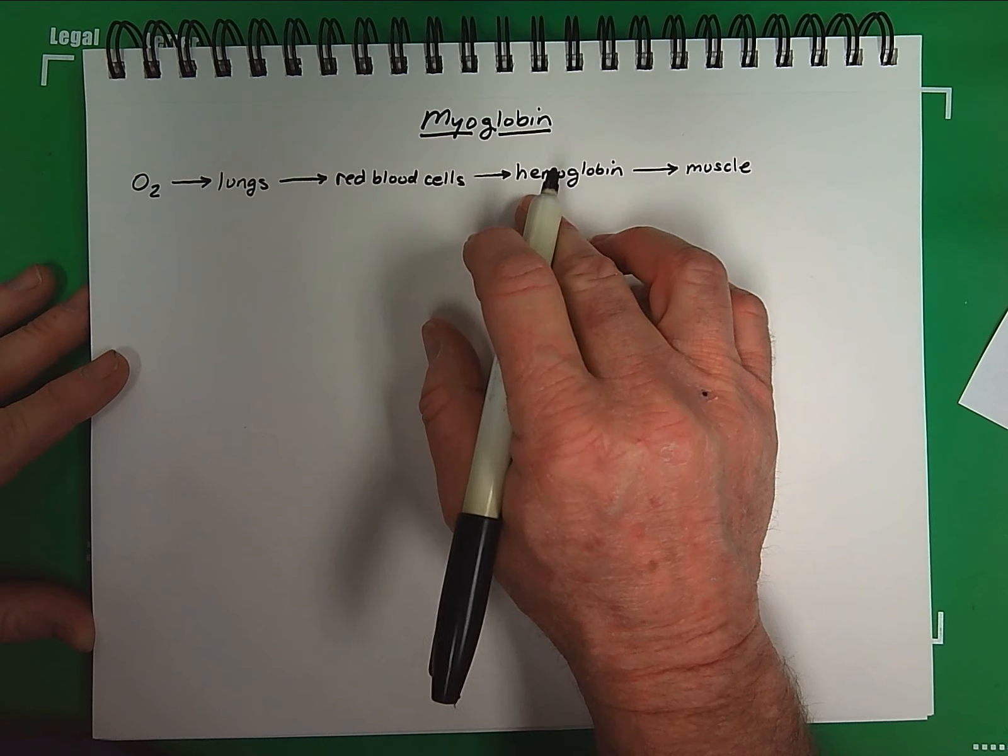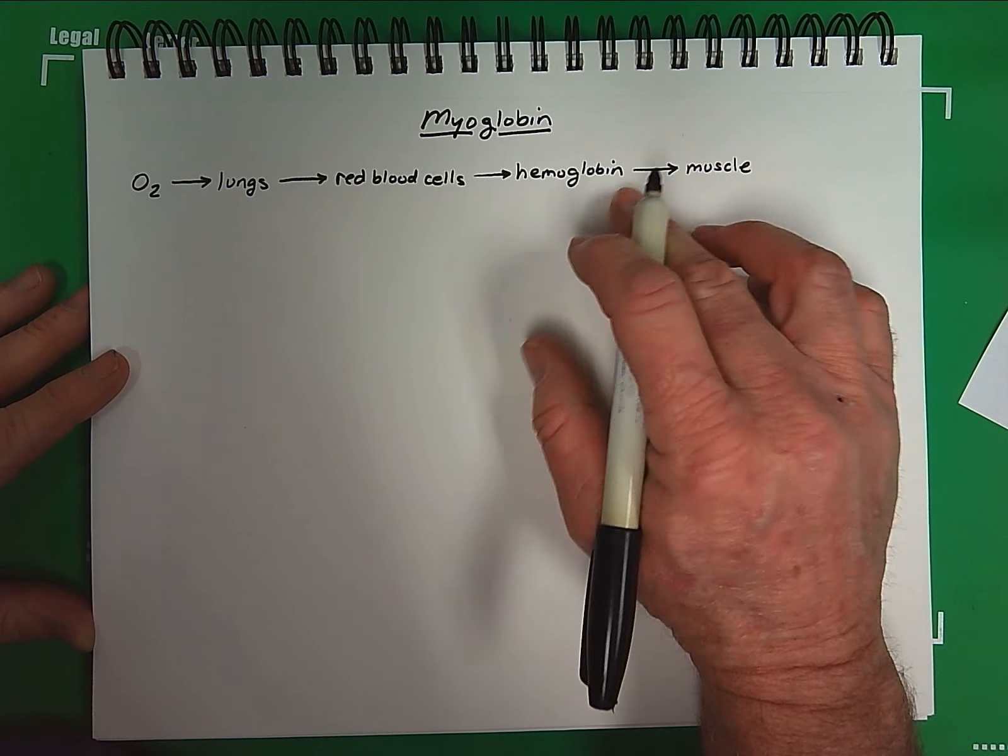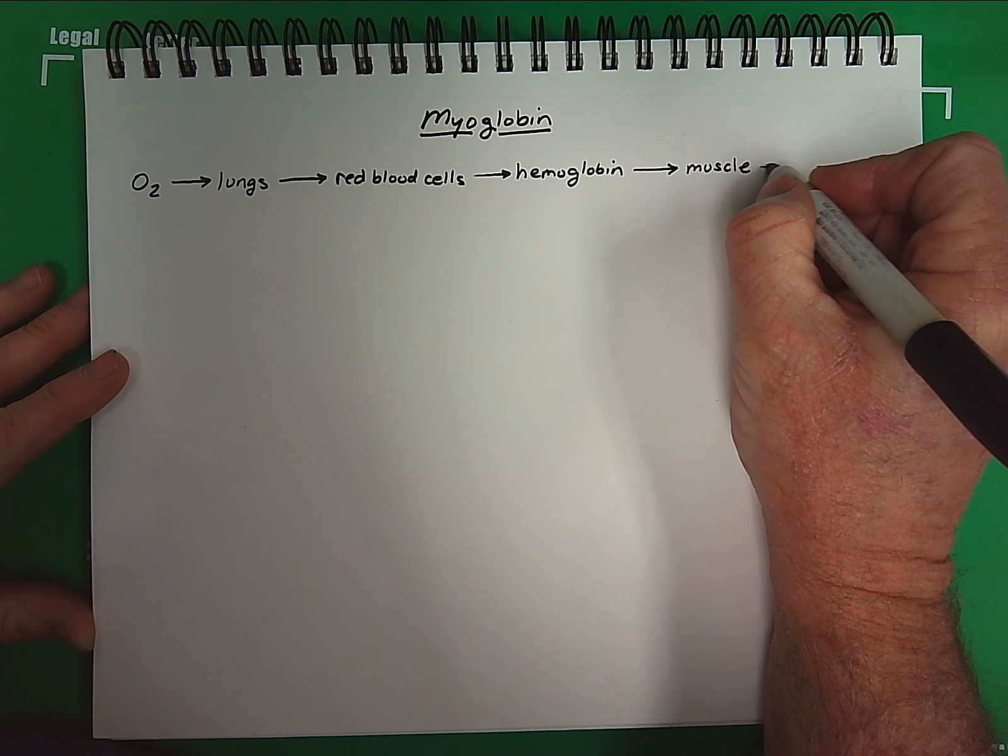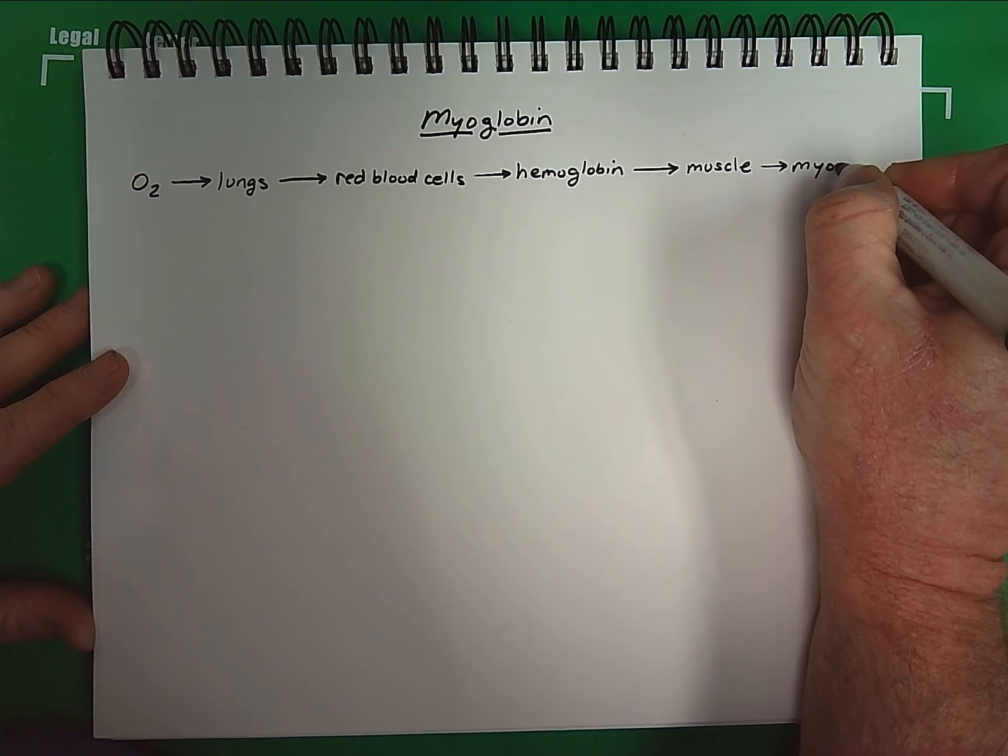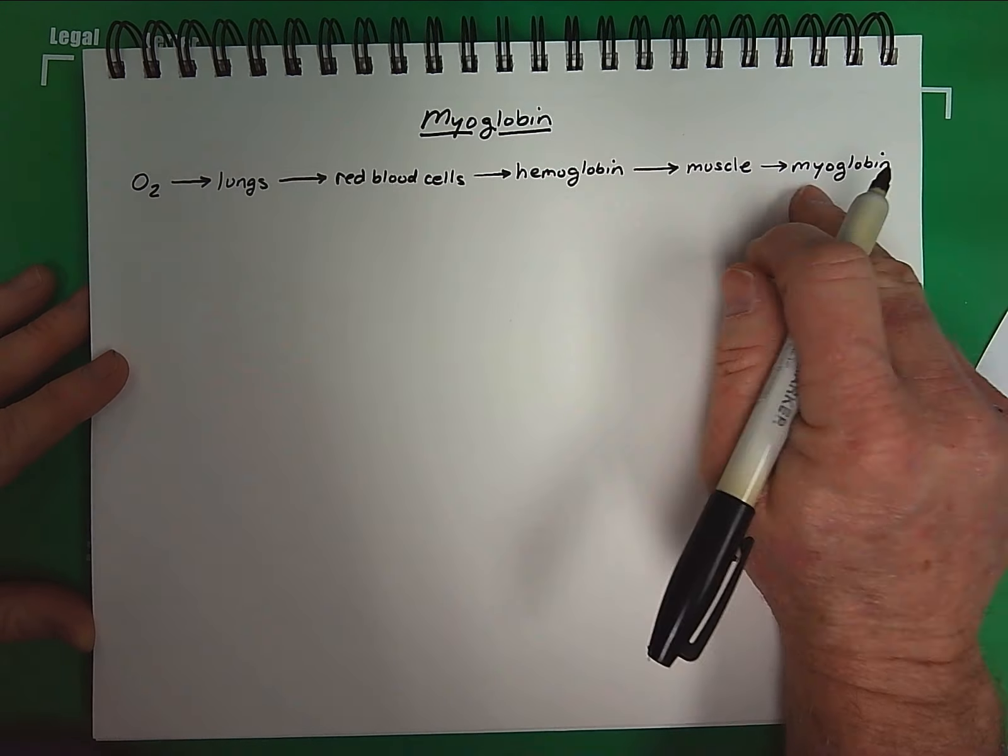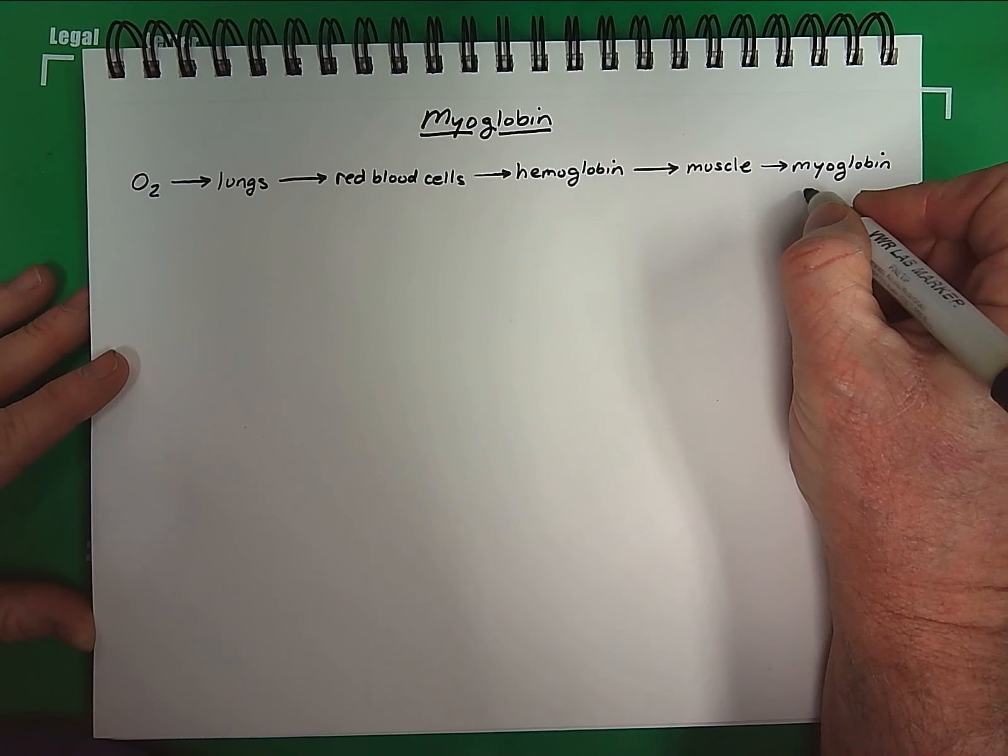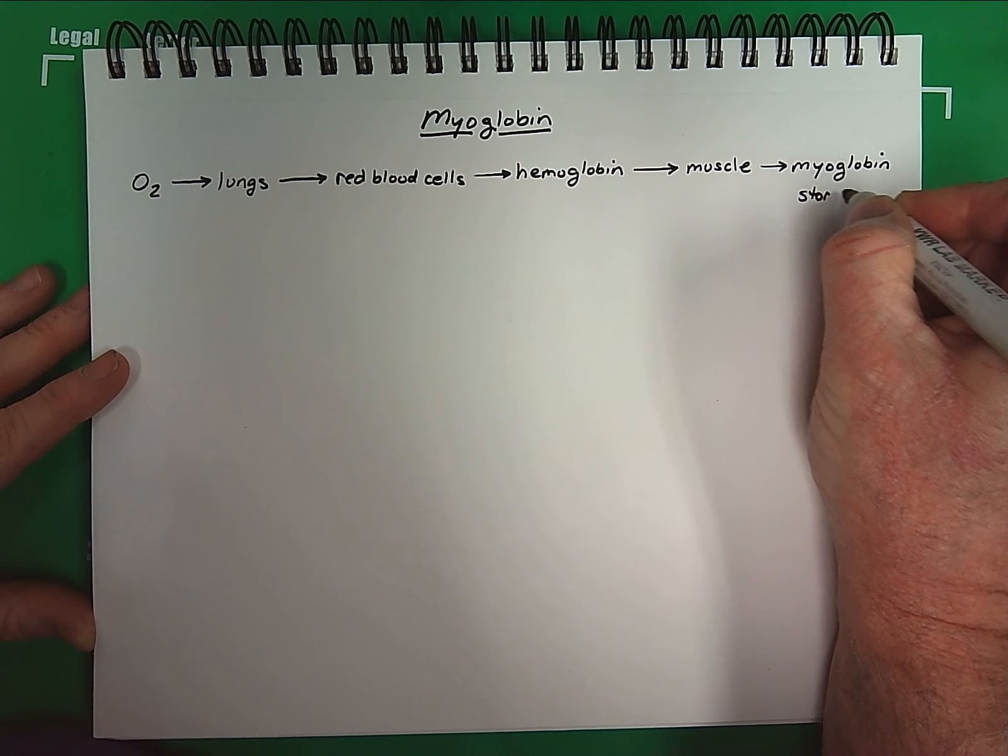Muscle is a very high user of oxygen because of its need for energy. The oxygen is transferred from hemoglobin to muscle. Some of it is used immediately but most of it is actually stored, and it's stored bound to myoglobin. So myoglobin is the major storage binding protein of oxygen in muscle tissue.